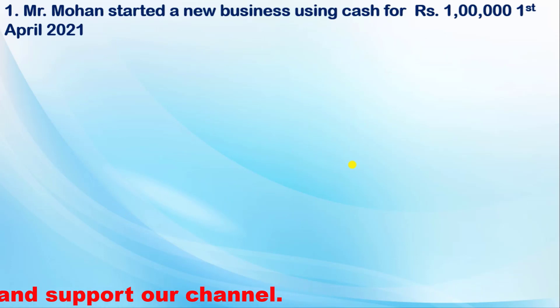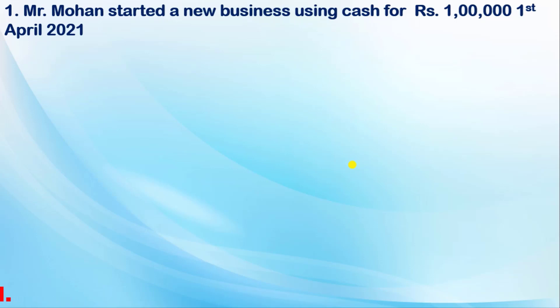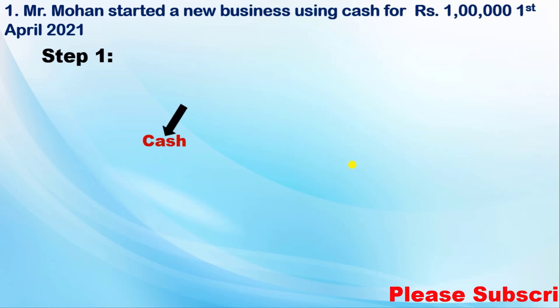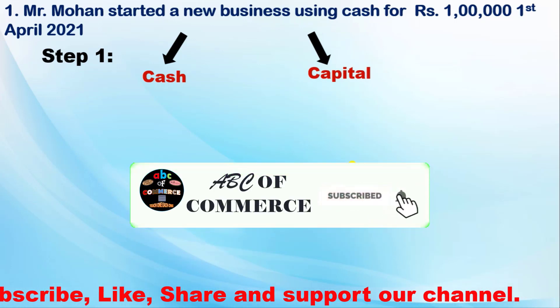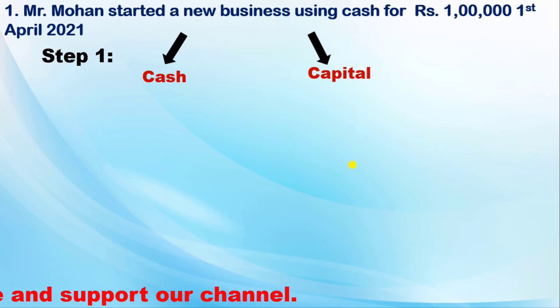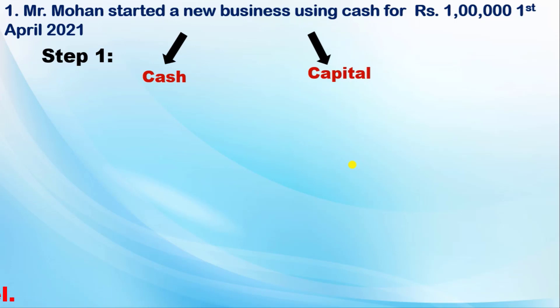Here we have the first example: Mr. Mohan has started a new business in which he has used 1 lakh on 1st April 2021. In journal entries, you will follow some steps in series. The first step is to identify which accounts you are affecting. Mr. Mohan started a business using cash, so the first account affected is cash and the second is capital, because if the owner is investing cash or non-cash items, we call it capital.